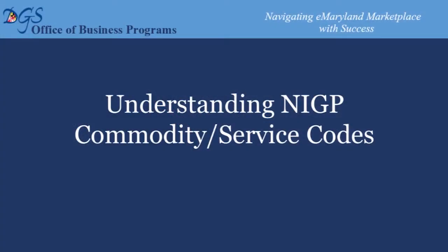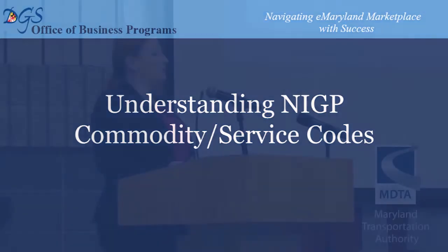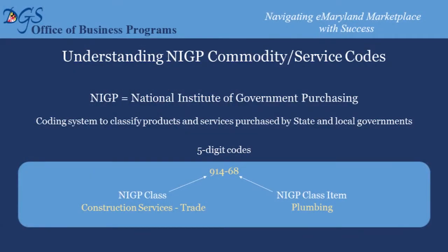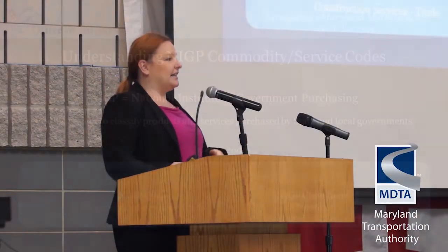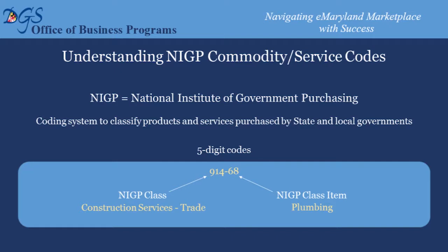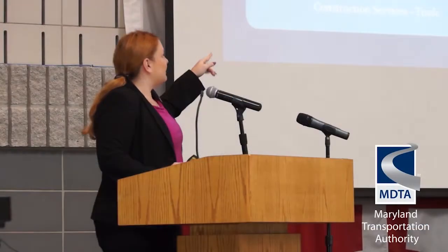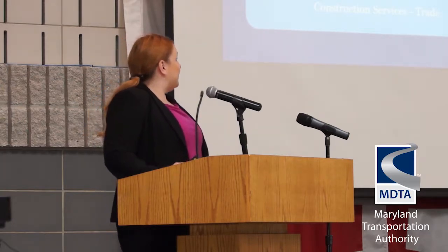The first thing I want to start with is the NIGP codes — another acronym. NIGP stands for the National Institute of Government Purchasing. They're very similar to the NACE codes you might be familiar with, but it's a different coding structure. For the state of Maryland, we use a five-digit code: the first three digits are the NIGP class indicating the product or service, and the last two digits indicate the NIGP class item, which is more specific. For example, 914 is the NIGP class for construction services by trade, and 68 indicates the trade is plumbing.